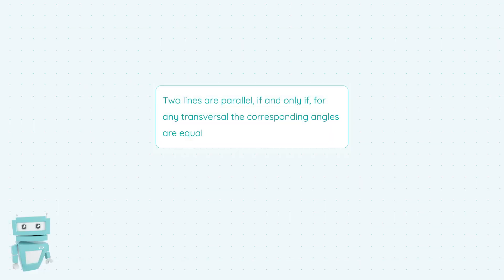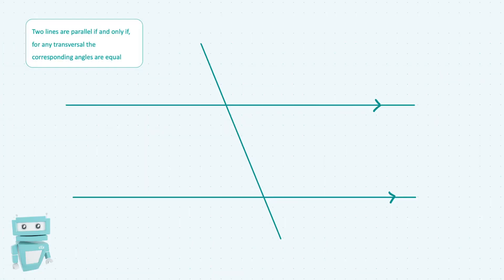Okay, so now we're going to have a look at the theorem that two lines are parallel if and only if for any transversal the corresponding angles are equal. This is essentially a condition that you need to know. It's only possible for two lines to be parallel if the corresponding angles are equal.